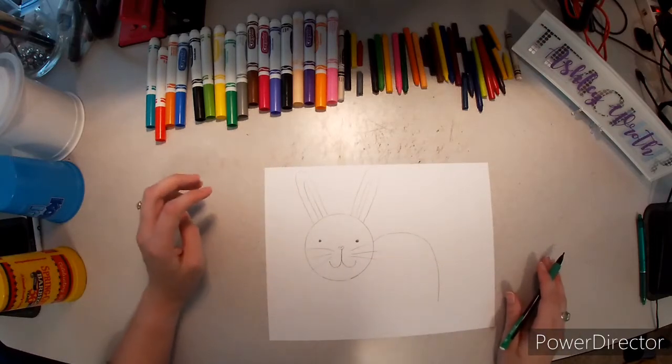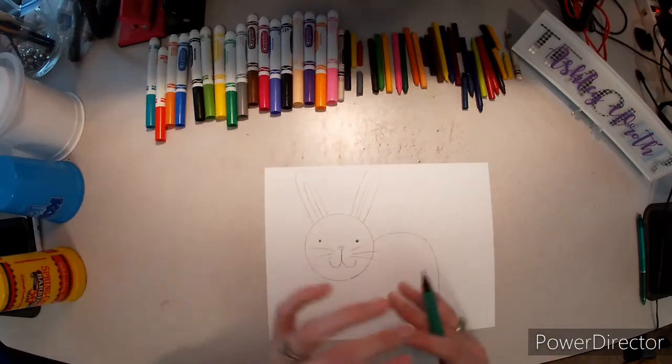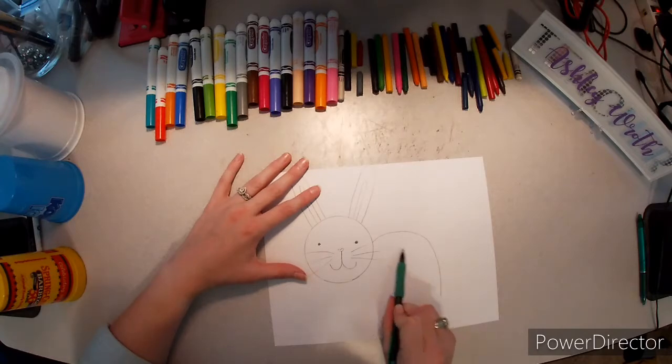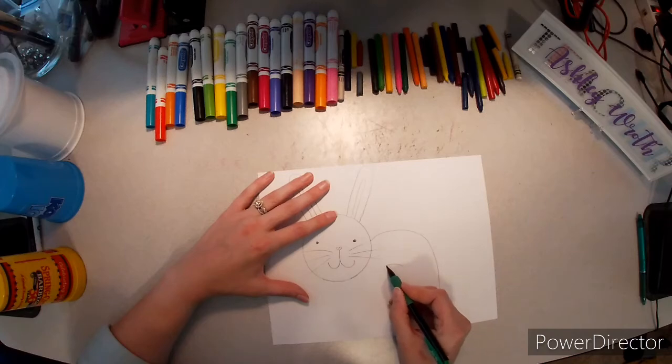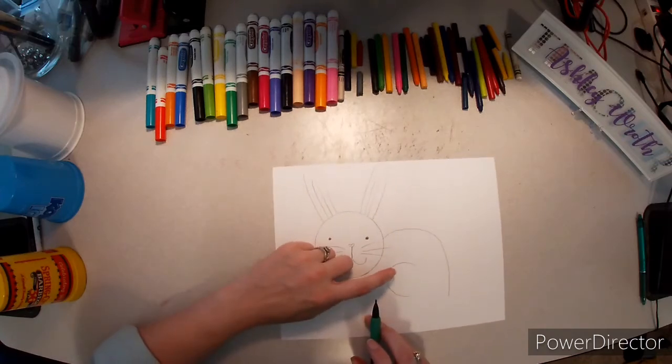Now, rabbits have legs that are all folded up. Because when they stretch out, they get really long so they can jump real far. So for our rabbit's folded up legs, we are going to start in the middle of his body here and do a big curve. This is actually his knee.